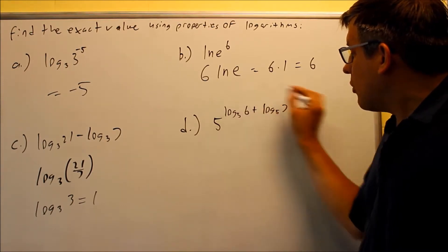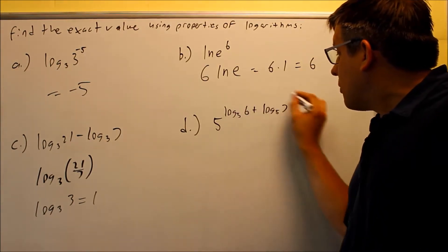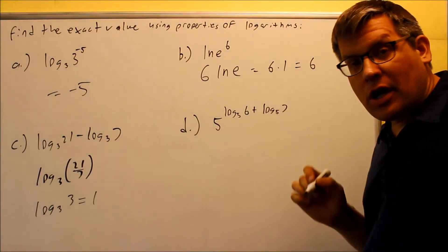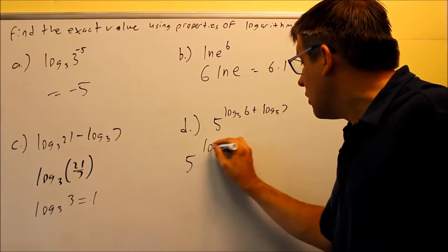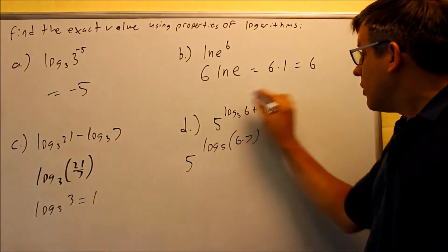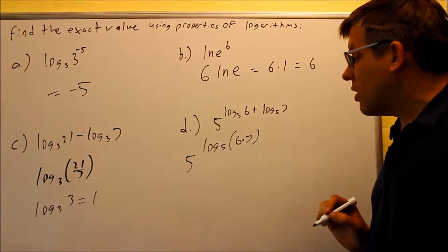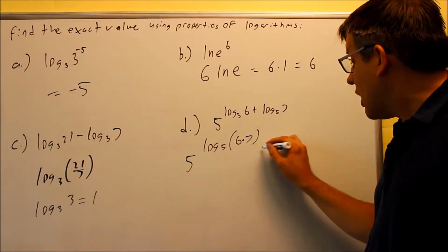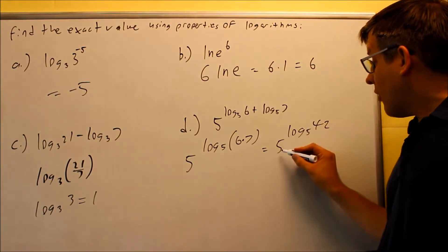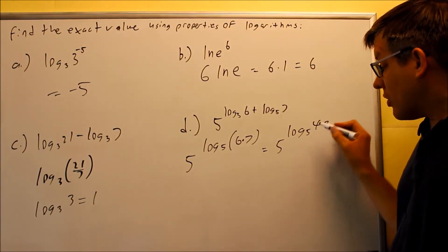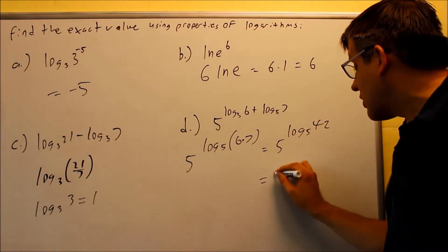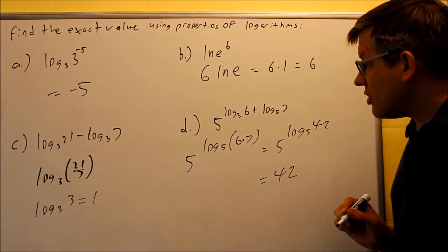For this one, we first start with the exponent part. The exponent part is going to be using rule number 6. We'll take the plus and turn it into a multiplication. So we start with the exponent, that's log 5 of 6 times 7. We're taking the two logs, turning it into a single one, that's a multiplication there. 6 times 7 gives log 5 of 42. Now we have a 5 down here and a 5 here. This is going to use rule number 3, where you have this and this match, that's going to cancel, giving you 42 as the answer.